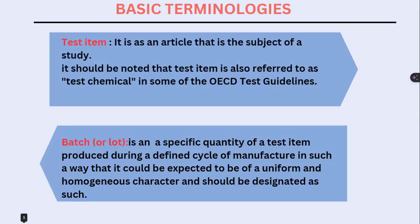There are some basic terminologies in test item characterization. First is 'test item' — any article that is the subject of a study, on which we will conduct research. It may be from a natural or synthetic source, any chemical entity, medical device, cell, or organism. It should be noted that a test item is also referred to as a 'test chemical' in OECD test guidelines.